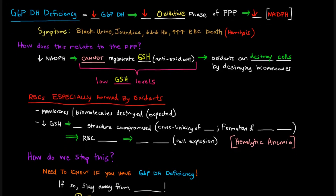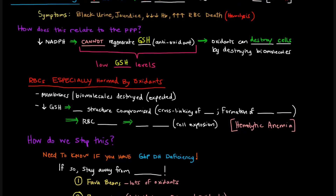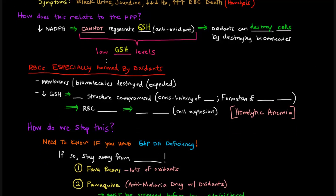There are some cells that are specifically harmed more than others. Red blood cells in particular are especially harmed by these oxidants. Their membranes and biomolecules are destroyed because there's low GSH around to fight off those oxidants. Further than that, low GSH levels compromise the structure of hemoglobin — hemoglobin actually depends on GSH to keep its structure intact. When there are low levels of GSH, the structure of hemoglobin is compromised, leading to cross-linking of hemoglobin molecules and the formation of Heinz bodies on the red blood cells.